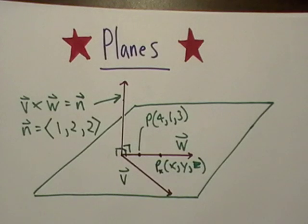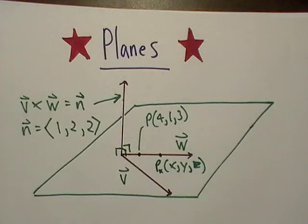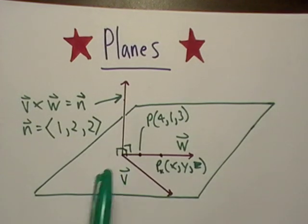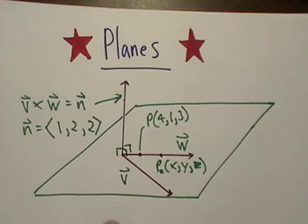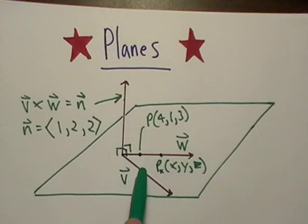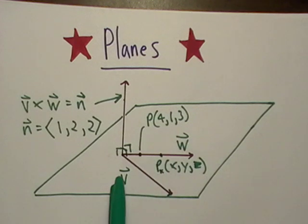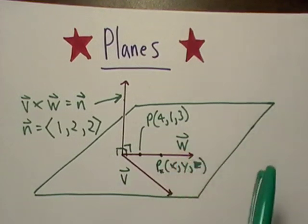Now we're going to talk about planes and how a plane equation defines a plane. I've drawn some things here — here's a plane, and it goes on forever in all directions except up and down. Vector V and vector W are on the plane — you could say they're coplanar.